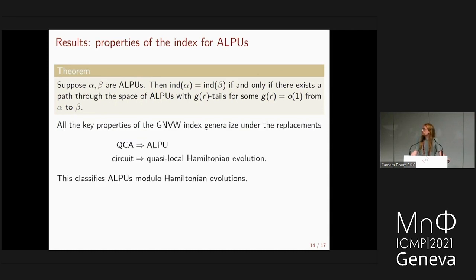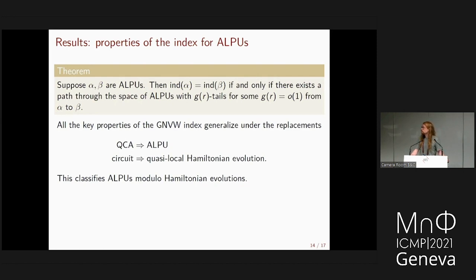All properties of the original GNVW index generalize: replacing QCA by ALPU and quantum circuits by quasi-local evolutions, this completely classifies ALPUs modulo Hamiltonian evolutions.